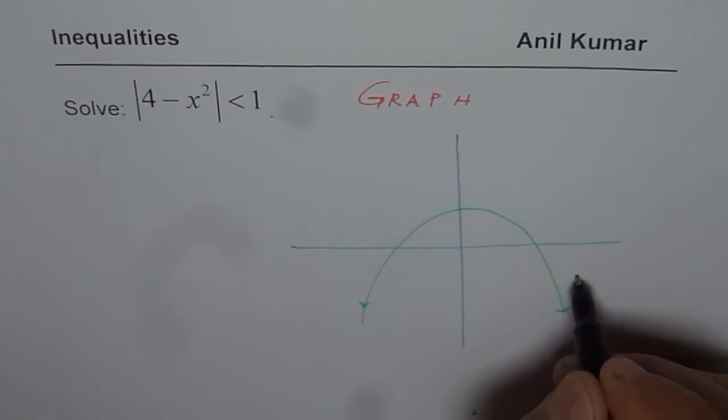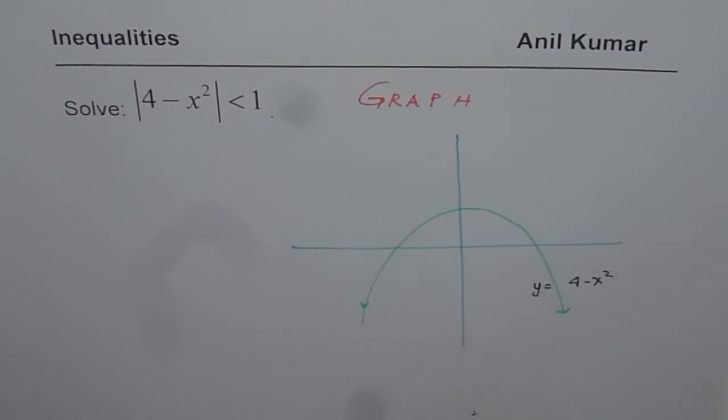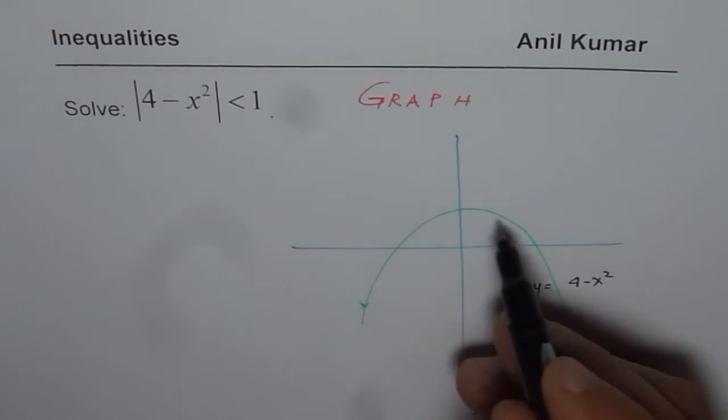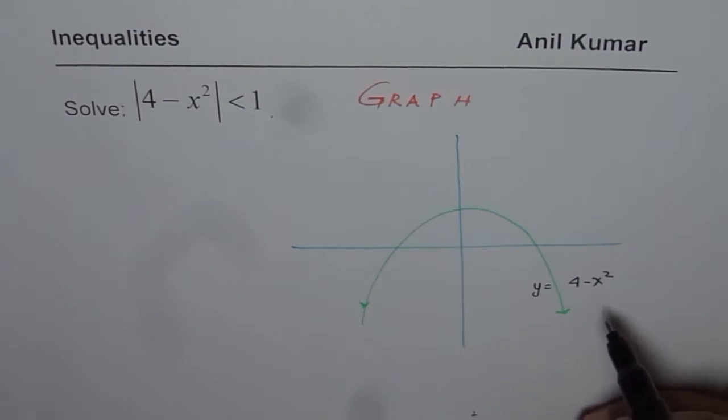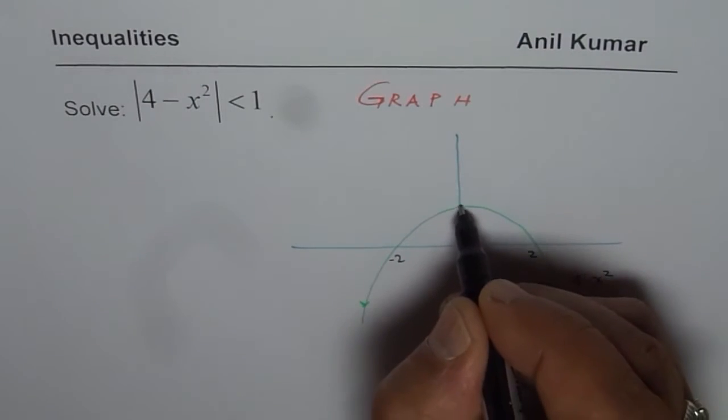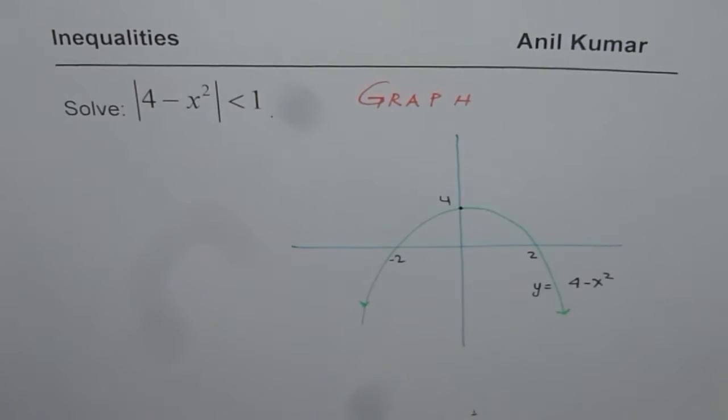So our function here is 4 minus x squared. So we can say y equals to 4 minus x squared, that means a parabola which is inverted, I mean going downwards, with x intercepts at minus 2 and plus 2, and the y intercept is at 4. So that is the parabola 4 minus x squared.